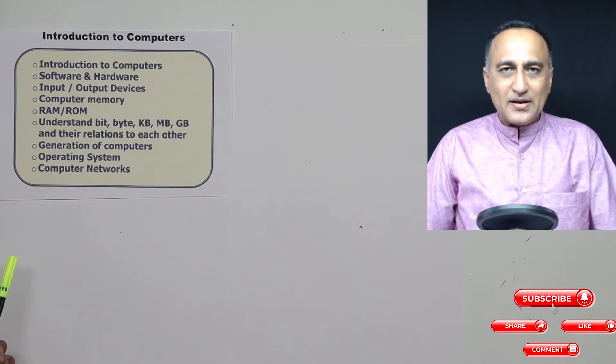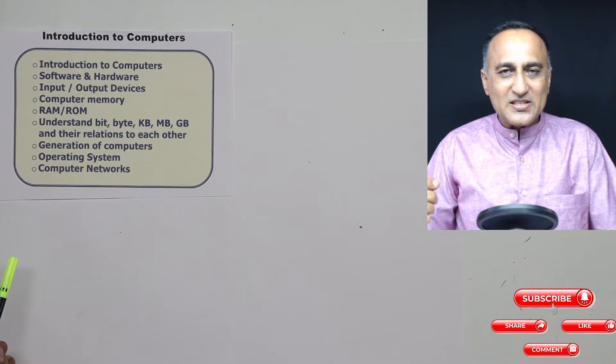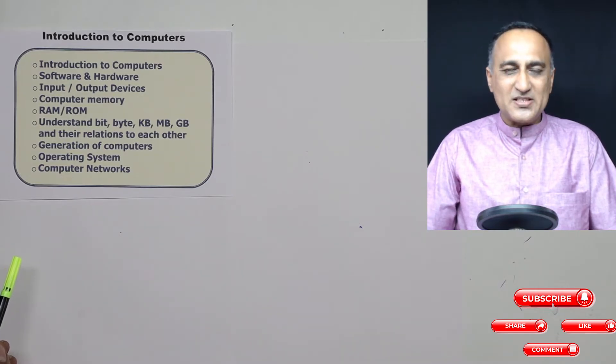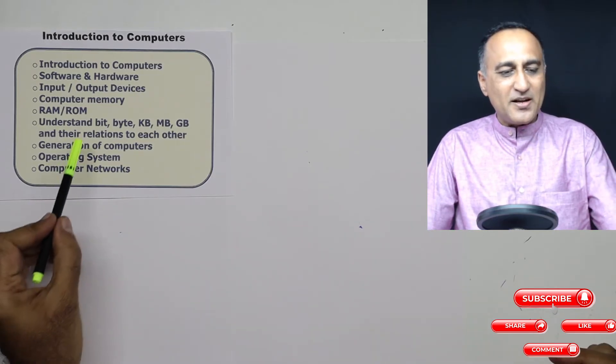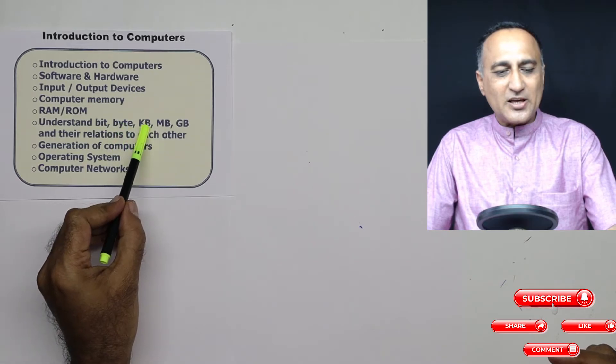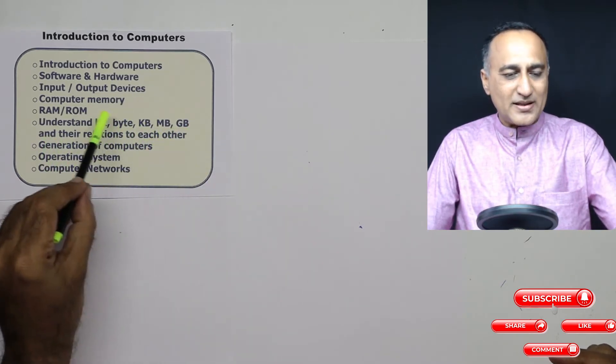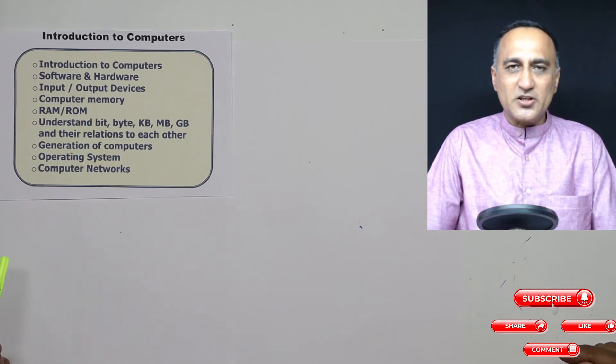Then data is stored in computers as ones and zeros. Since data is stored as ones and zeros, just as you say one rupee, ten rupee, one hundred rupees, similarly data is measured using bits, bytes, kilobytes, megabytes, gigabytes, and so on, and what are their relationships to each other.